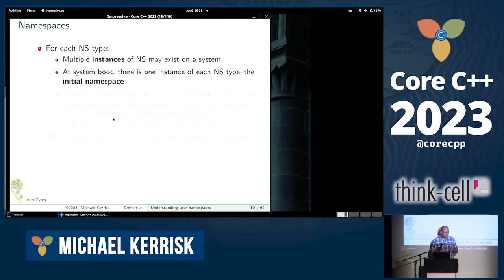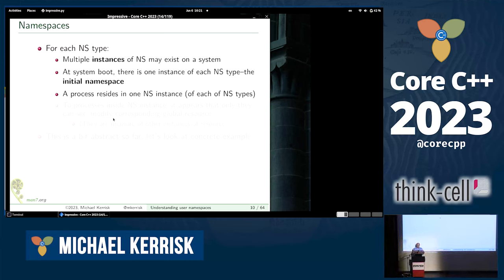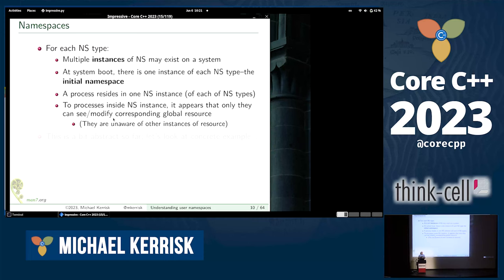For each namespace type, there can be multiple instances on a Linux system. When the system is first booted up, there's one instance of each namespace type, called the initial namespace instance. Each process resides in one instance of each of the eight namespace types. Processes inside a particular namespace instance share a view of a global resource; if that resource gets modified, the change is visible to all processes in that namespace instance, but not to processes in other namespace instances.